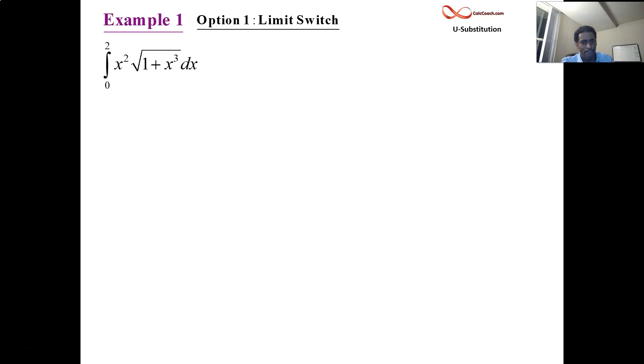When you have a definite integral there's two options that you can take. For this example we'll take the first option of doing a limit switch. We're going to change the variables from x's into u's and then switch the limits as well. These are x numbers, we've got to figure out what the new numbers are in u.